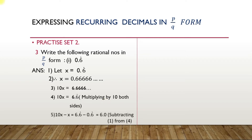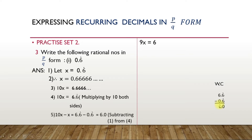The next step is subtracting equation 1 from equation 4. So 10x minus x equals 6.6 recurring minus 0.6 recurring. The answer is 6.0. So 10x minus x is 9x, and this equals 6. Therefore 9x equals 6, and x equals 6 upon 9, which on reducing gives 2 upon 3.